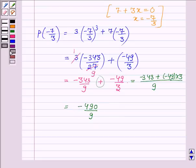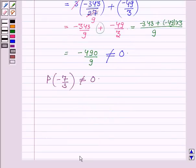which is not equal to 0, so this implies that p at minus 7 upon 3 is not equal to 0, and this shows that 7 plus 3x is not a factor of p(x).